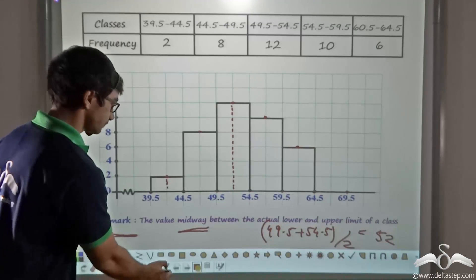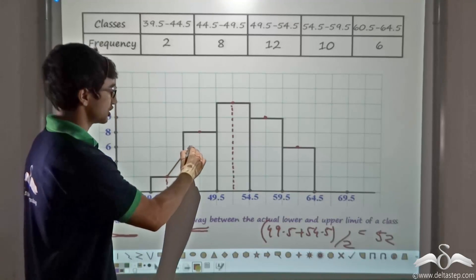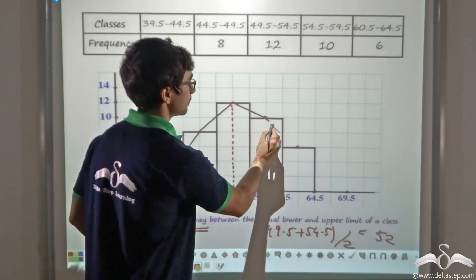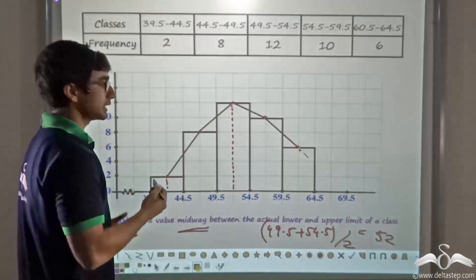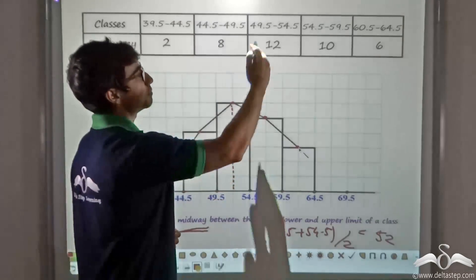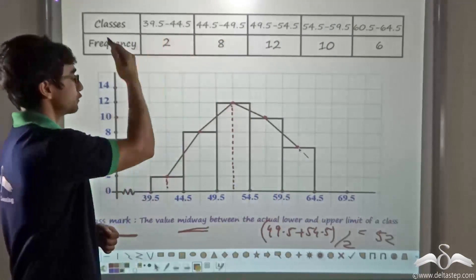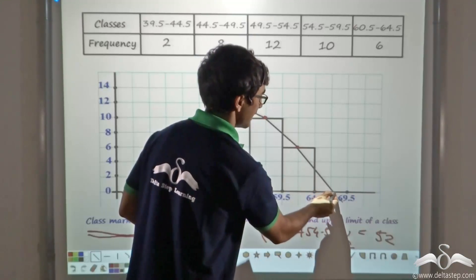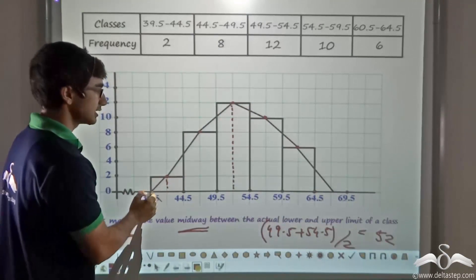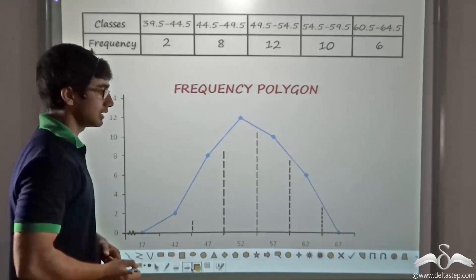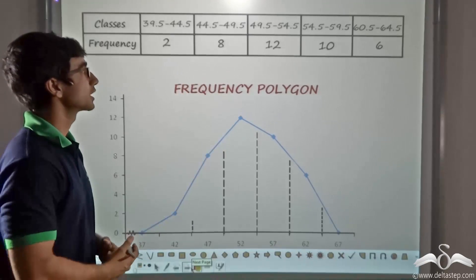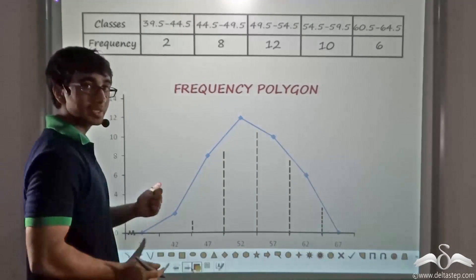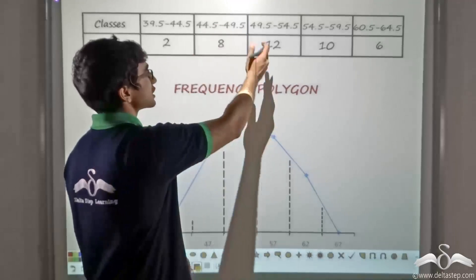By joining the class marks, I get a structure that looks like a polygon. This structure must be closed at both ends — since there is no class beyond 64.5 and no class before 39.5, these endpoints are simply joined to the x-axis. The resulting closed figure is called a frequency polygon, which is the polygon obtained by joining the vertices that are the class marks of the respective classes.